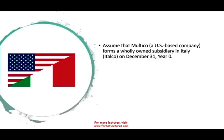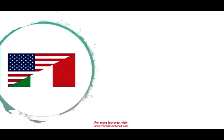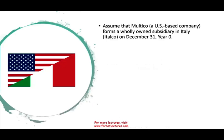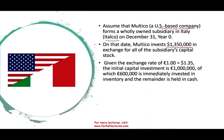To illustrate this concept, we're going to use the same type of data as we did for the current rate method illustration, but now using the temporal method. A U.S.-based company purchased an Italian company on December 31st, year zero. The company invested $1,350,000 and bought 100% of the stock. The exchange rate was $1.35 to a euro — so we invested 1 million euros. Immediately, $600,000 was invested in inventory and the remaining $400,000 was in cash.